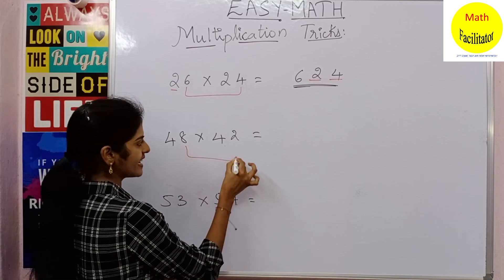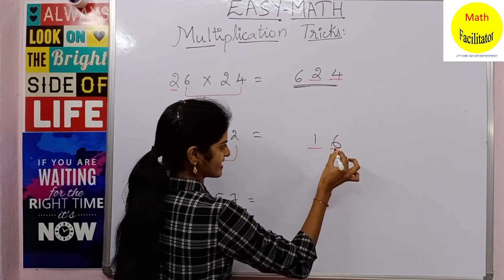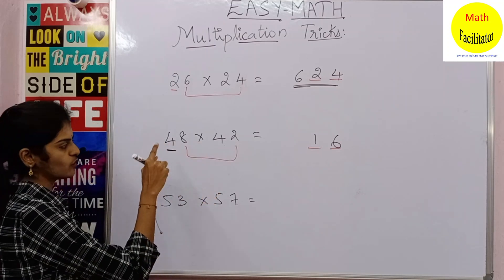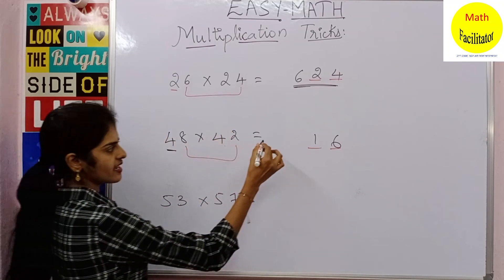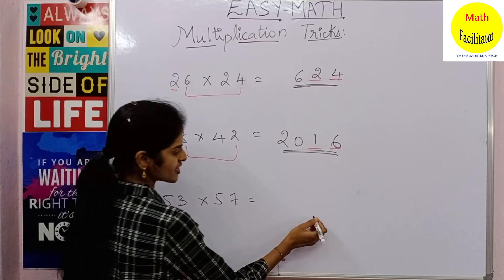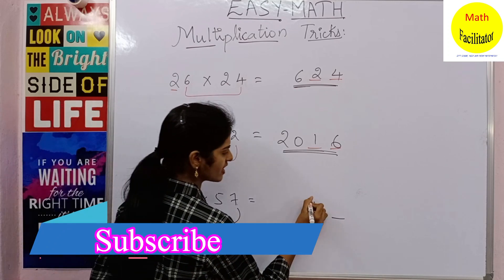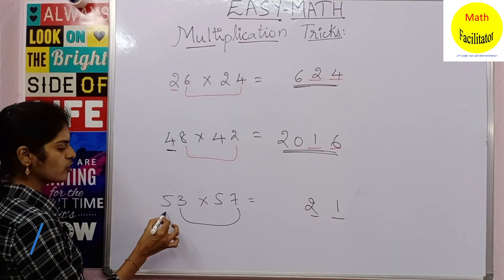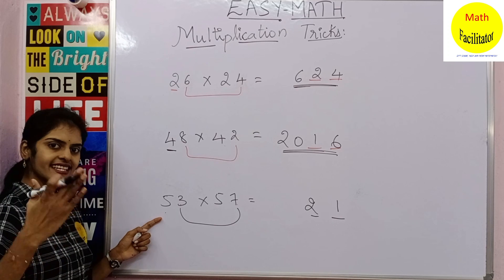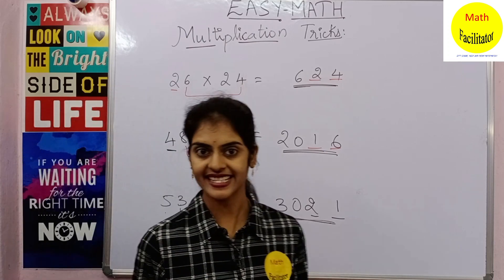For the next example, you multiply 8 and 2 to get the last two digits: 8 times 2 is 16. Then multiply 4 with the next number after 4, which is 5: 4 times 5 is 20. So the answer is 2016. For the third example, the last two digits come from 3 times 7, which is 21. Then 5 is multiplied by the next digit after 5, which is 6: 5 times 6 is 30. So you write 30 at the beginning, giving the answer 3021.